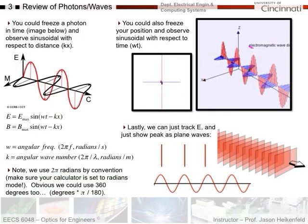So a brief review of photons and waves. As we discussed in the first week, you could freeze a photon in time and then observe it with respect to distance. So that would be the kx term in the wave equation here. And of course, you can't see the animated gifs here, but I gave you the link for it.